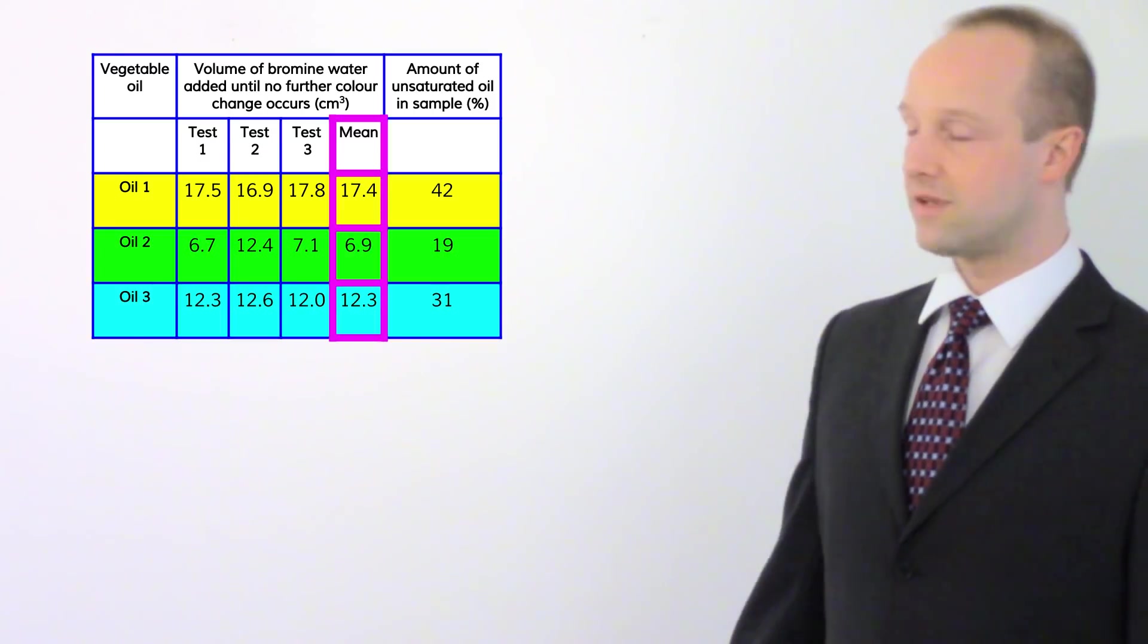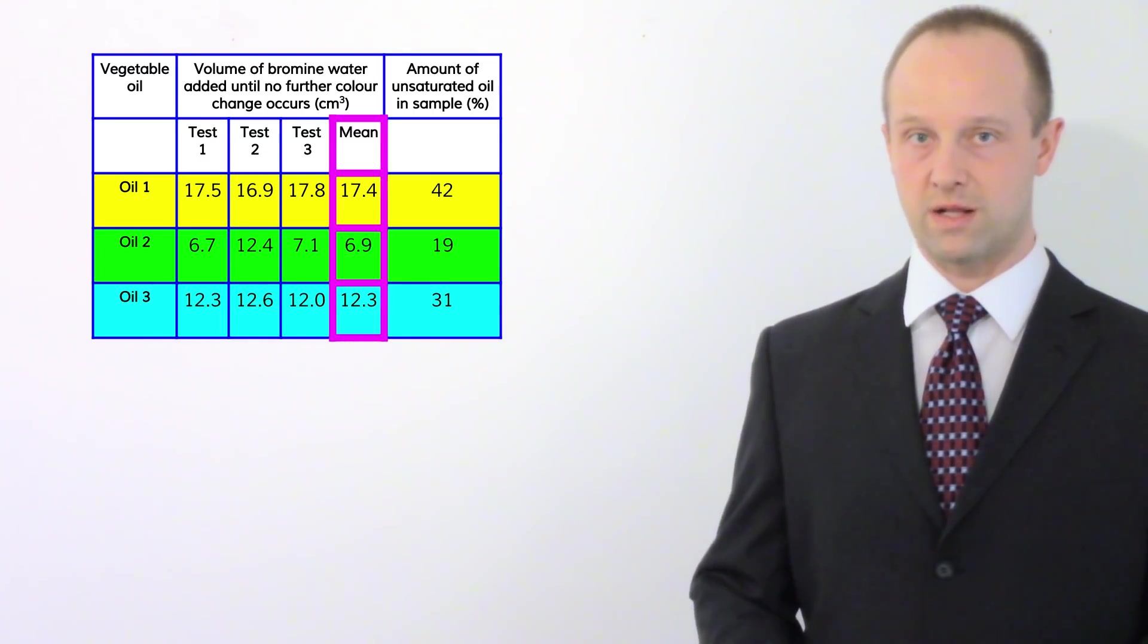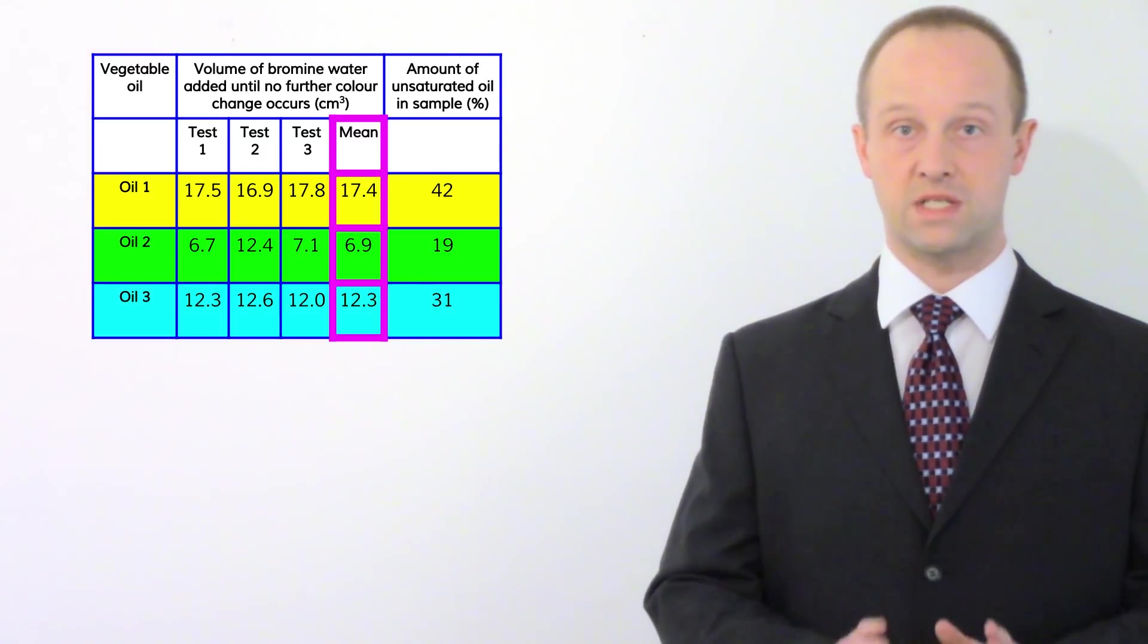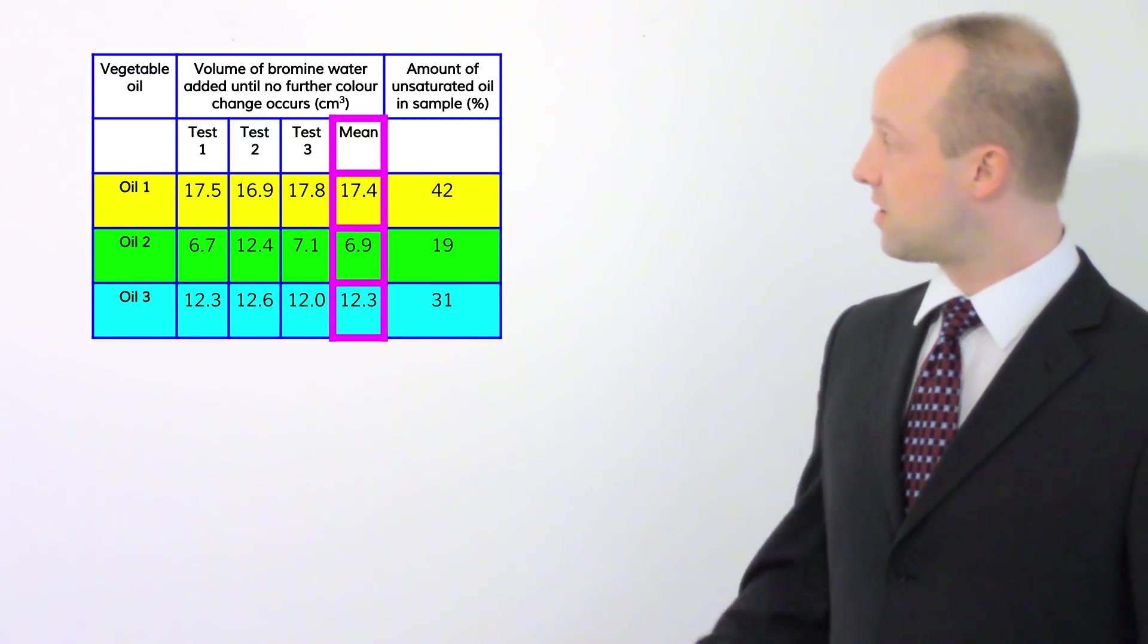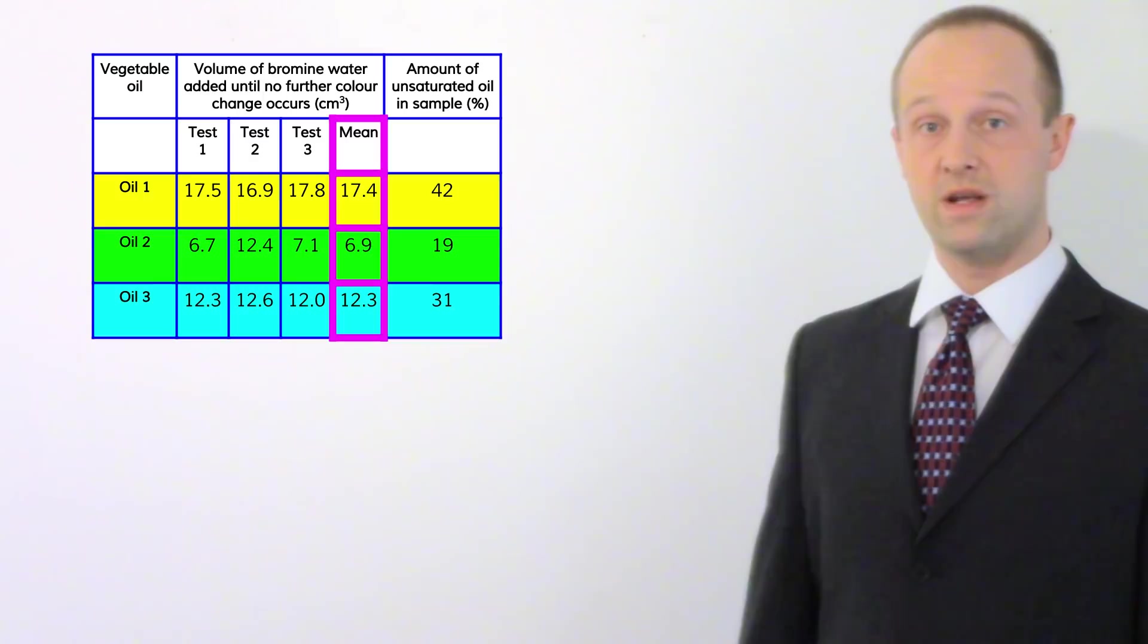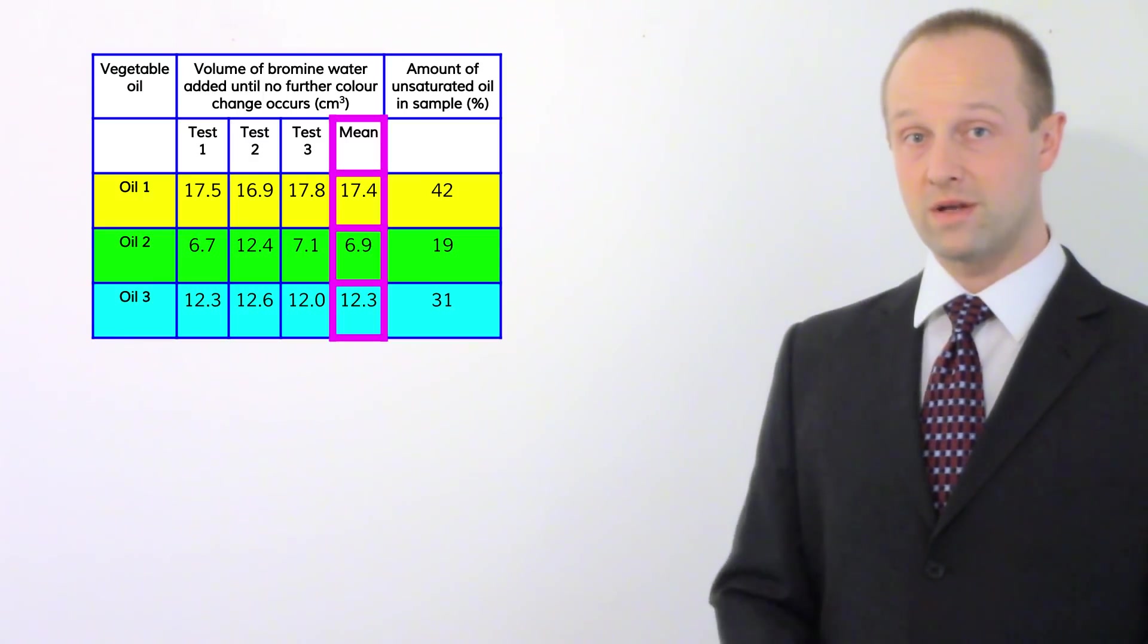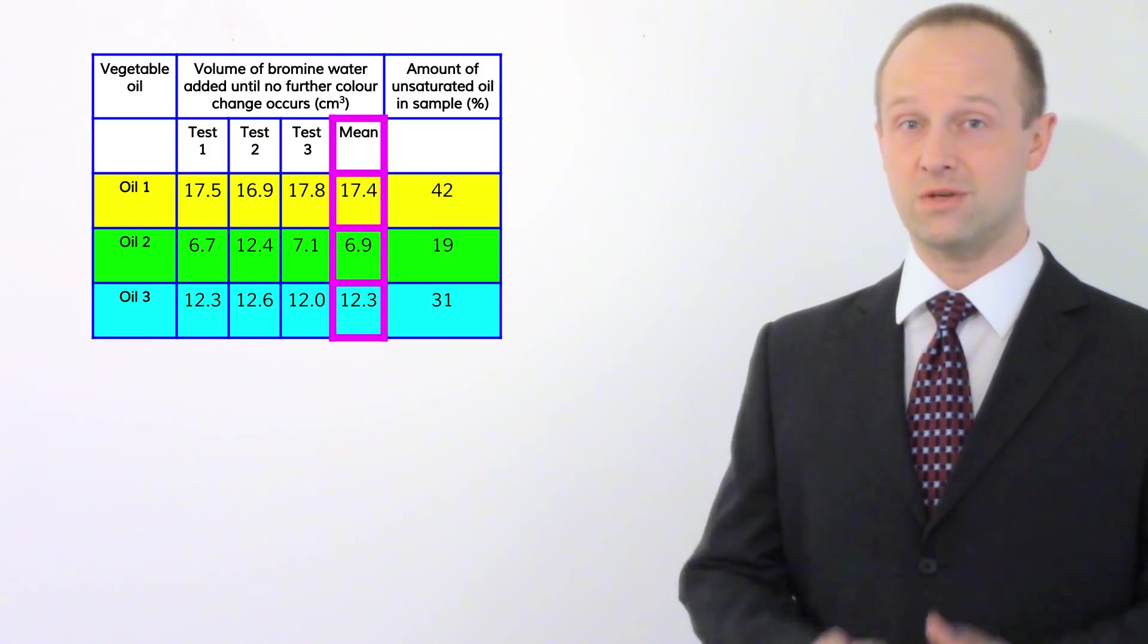But if you're looking for an anomalous result what you need to do is focus on the raw data, not the means, not this stuff about percentages of unsaturated oil. That is all totally irrelevant. You are looking at the raw data which has been collected by the person who's been conducting the experiment. So it's these nine boxes for tests one, two and three for the three oils.